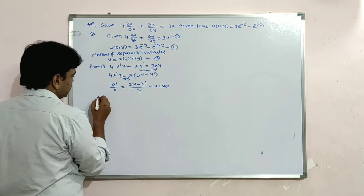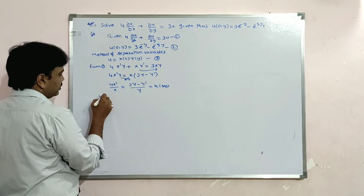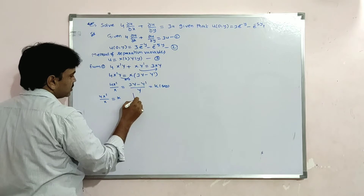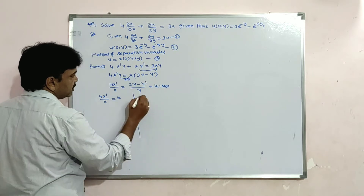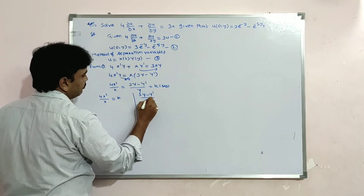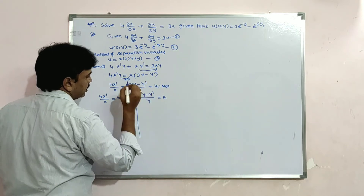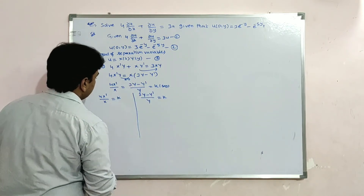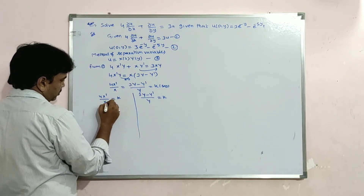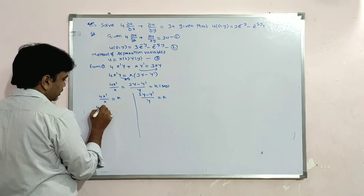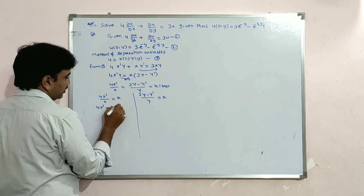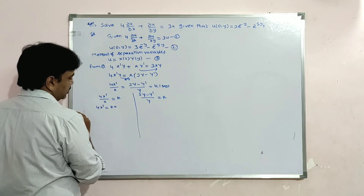Taking the first equation: 4X'/X = k, so 4X' = k·X. And the second equation: (3Y − Y')/Y = k.